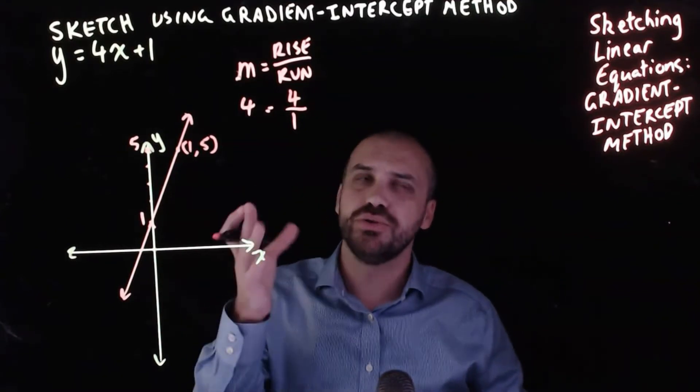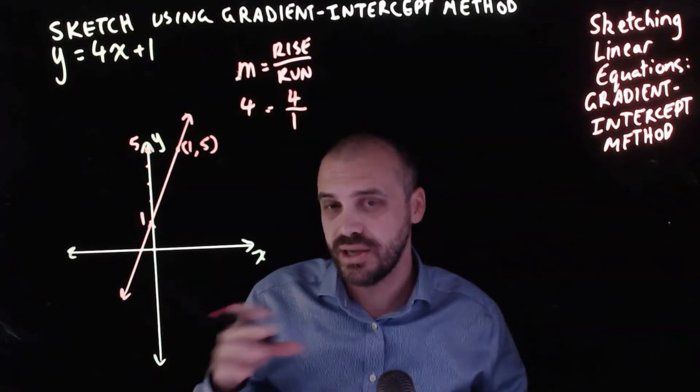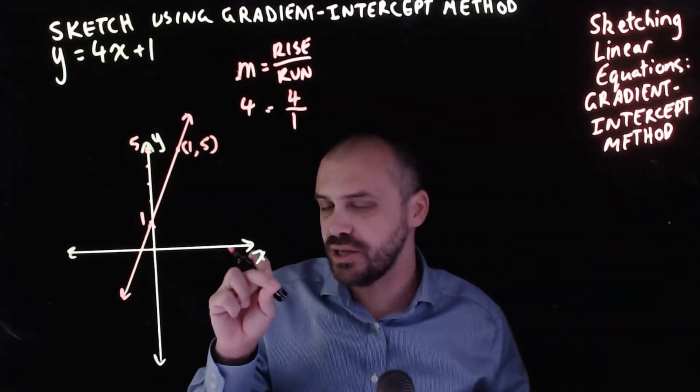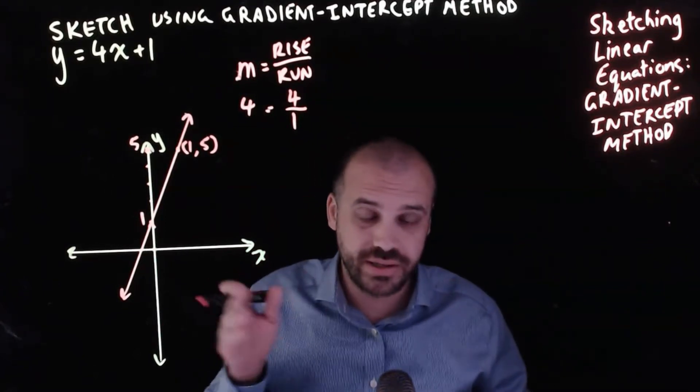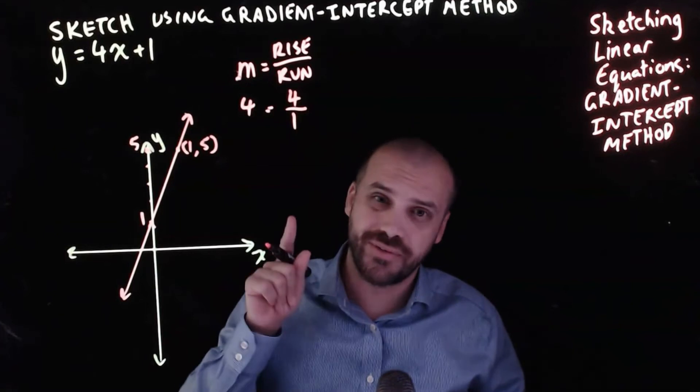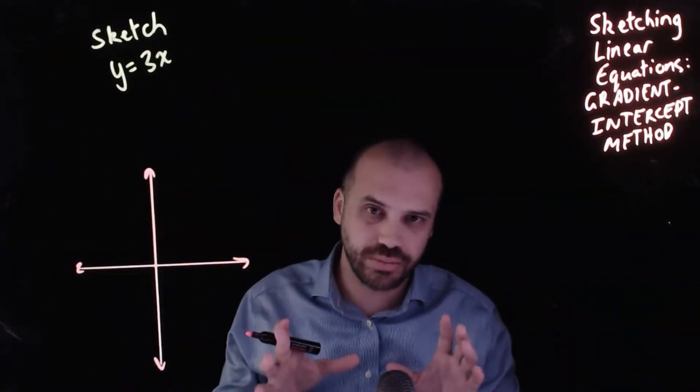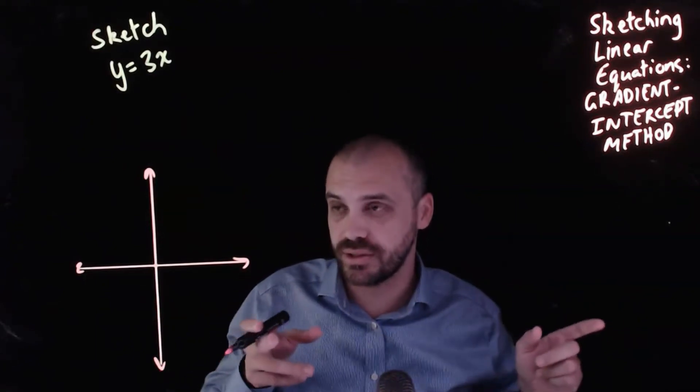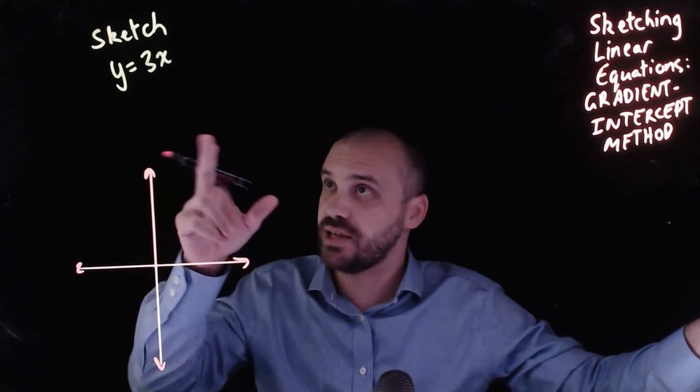But why on earth would you use this method when I think the x and y intercept method is far superior? Well there is a kind of line that won't work if you're trying to use the x and y intercept method that will work if you're using this method. This line here would cause you all sorts of problems if you tried to use the x and y intercept method. Because remember the x and y intercept method asks you to find the x intercept.